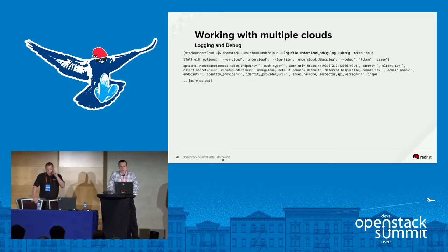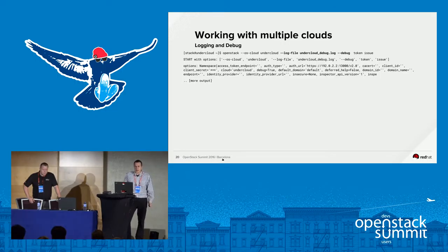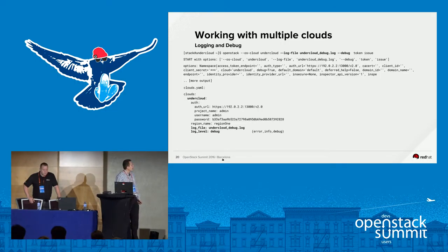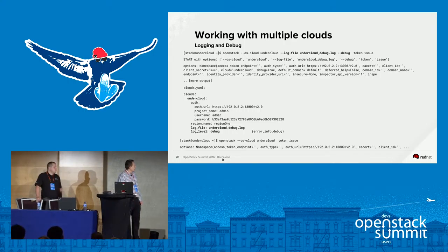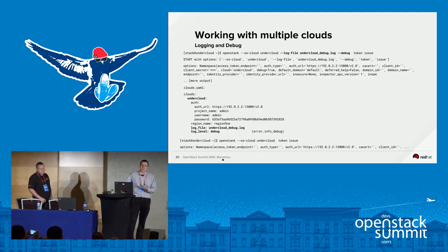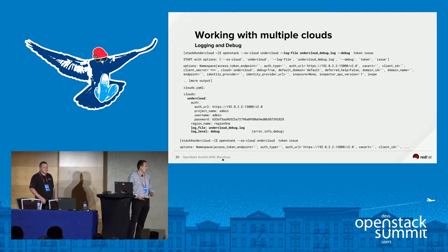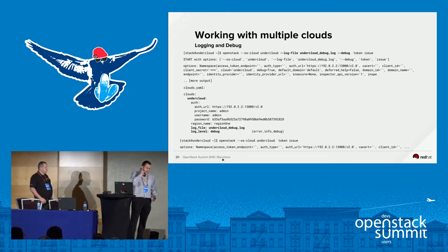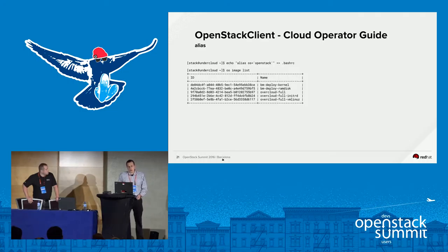For logging and debugging — if you're an operator, you probably use this quite a bit. There's --debug and --log-file that we typically use. In the clouds.yaml file you can include two more parameters: log_file and log_level. From there, you no longer have to add --debug and --log-file every time you execute commands. That's helpful when troubleshooting — I always forget to add --debug and then have to go back to find my output.